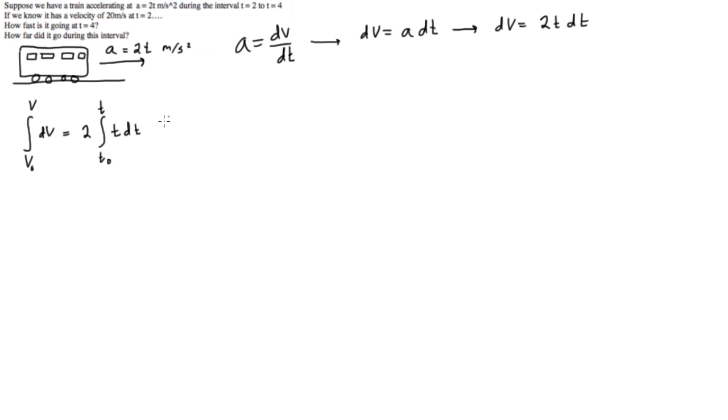So we will have from v0 to v, and then we will have from t0 to t. But we're considering the interval of 2 to 4, right? So we can say this is equal to 2. And remember we said that v0 at 2 seconds was equal to 20.